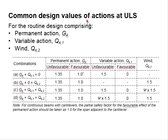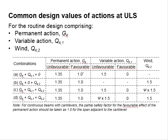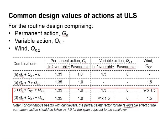For a typical design comprising permanent actions, variable actions, and wind actions, at least four types of combinations will be checked. The first condition is to check with GK and the variable actions, while the second condition is between GK and the wind actions. The third and fourth will be the combined actions of GK, variable actions, and wind actions.